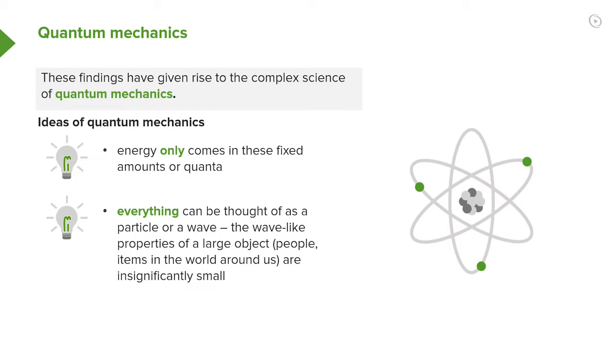However, the wave-like property of things which are really small, like electrons, is actually quite pronounced.